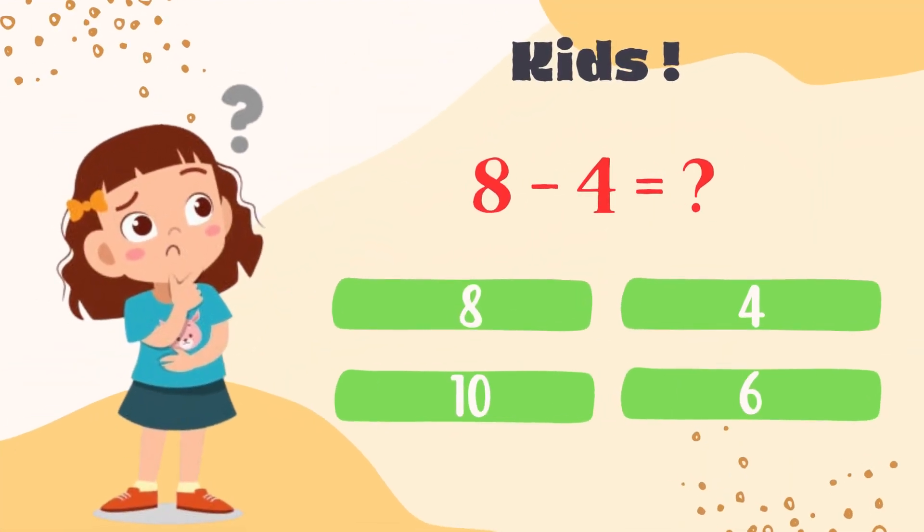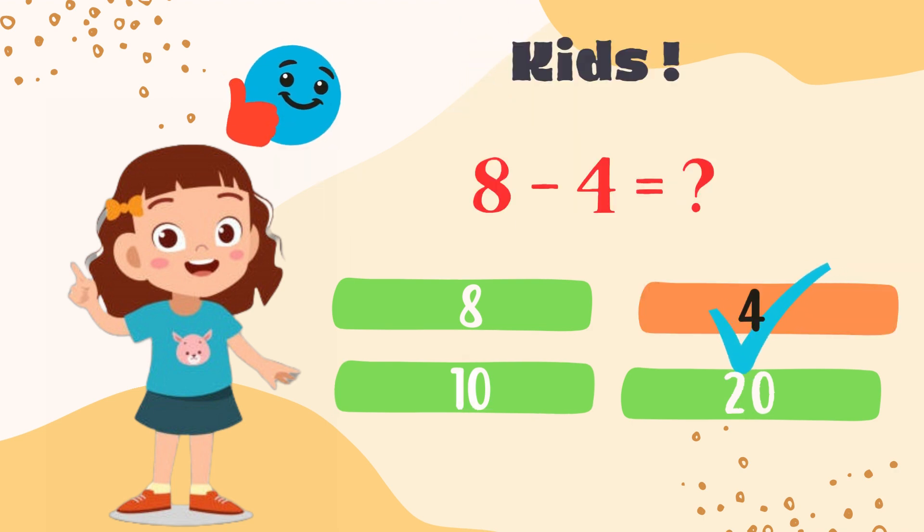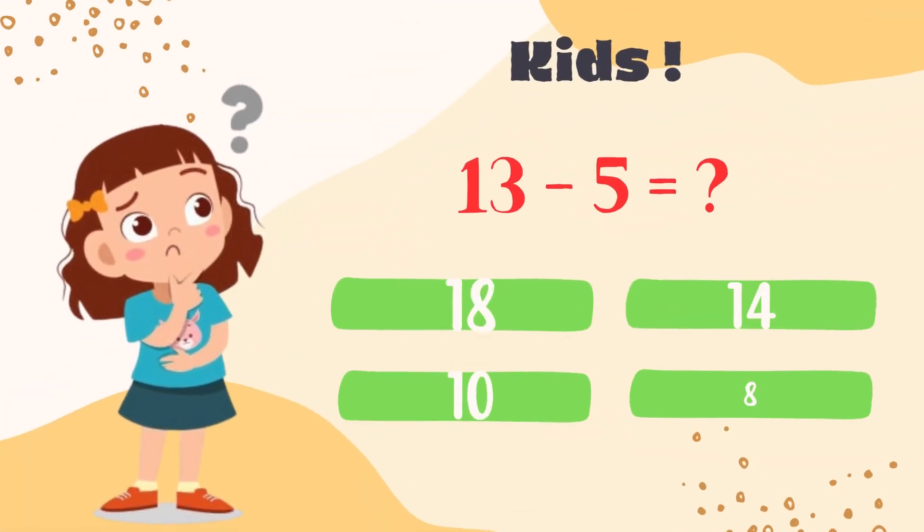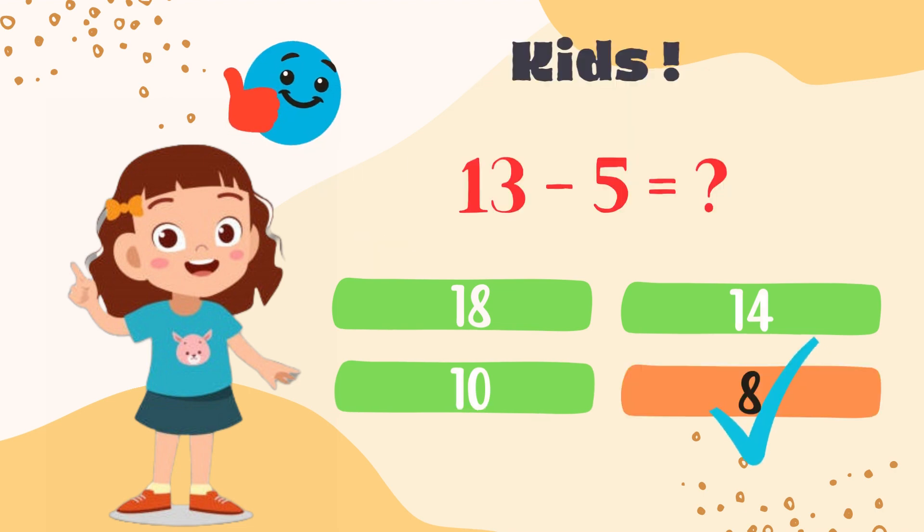8 minus 4? We will solve this by number line. Start from 8 and count: 1, 2, 3, 4. So 8 minus 4 is 4. What is 13 minus 5? Solve this by number line. Start from 13, count 5: 1, 2, 3, 4, 5. So 13 minus 5 is 8. Great my dear